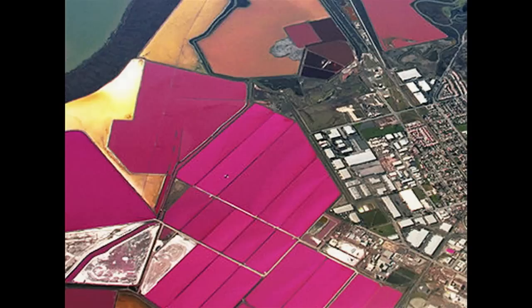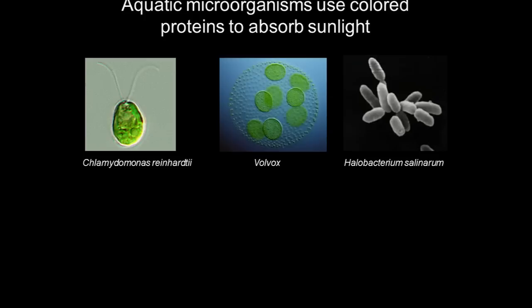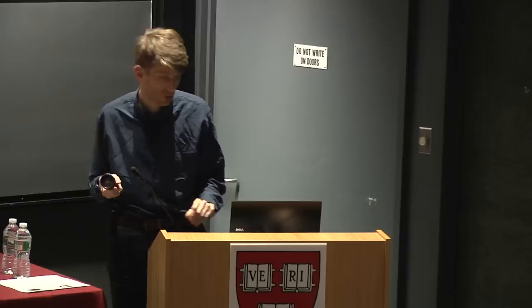Now I'm going to talk about using light to stimulate neurons. This story starts with a view from an airplane looking down at San Francisco Bay, where people are evaporating seawater to make salt. If you look down, you see these beautiful colors, coming from microorganisms growing in the water. These microorganisms produce proteins which they use to absorb sunlight — some to swim to the surface when it's bright, others to avoid ultraviolet light, and others to harvest energy from sunlight. There are actually thousands of varieties of proteins which these microorganisms use to interact with sunlight.